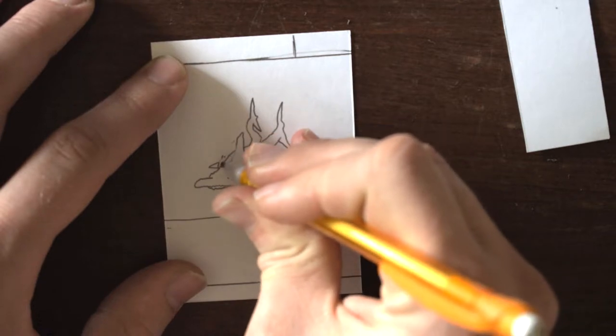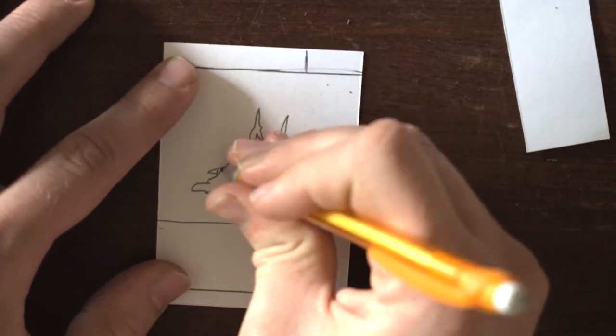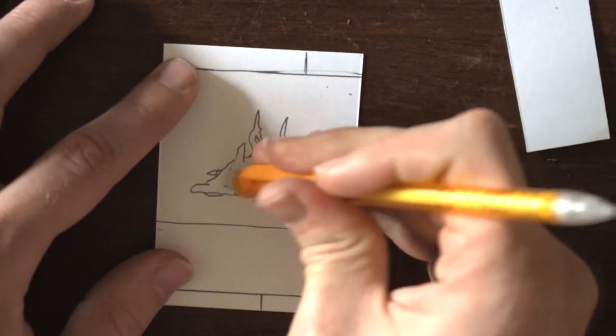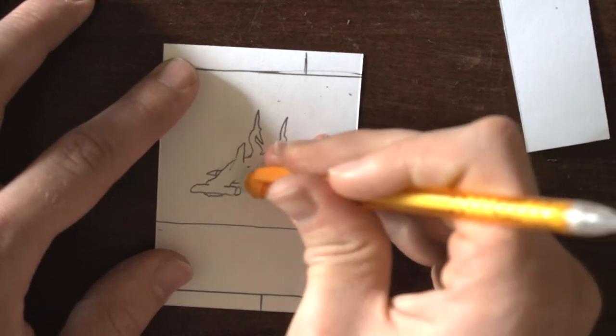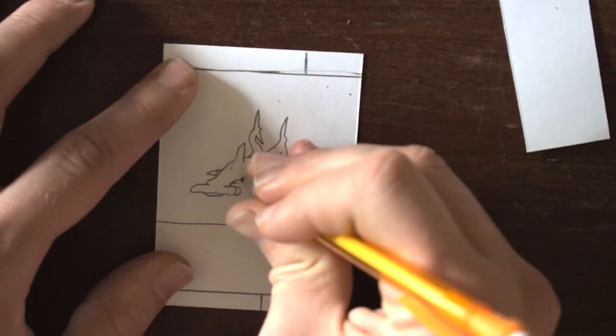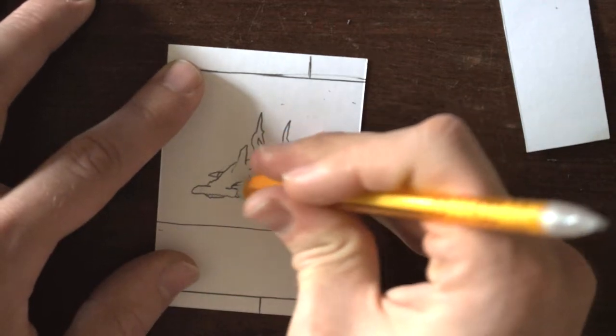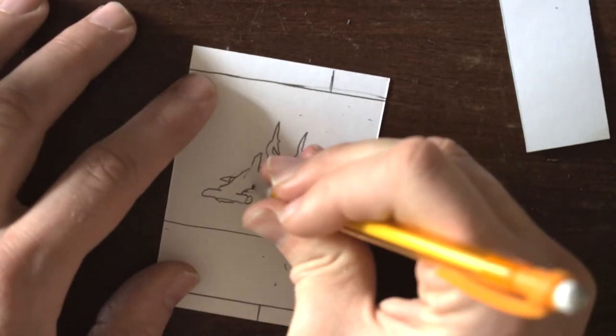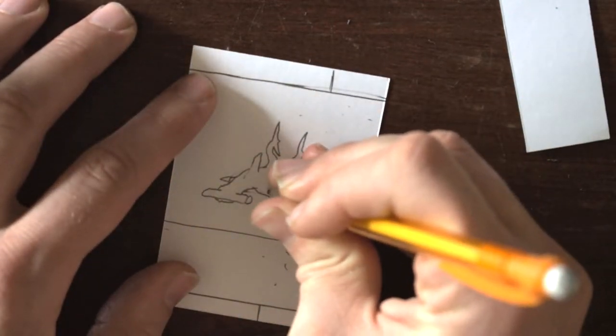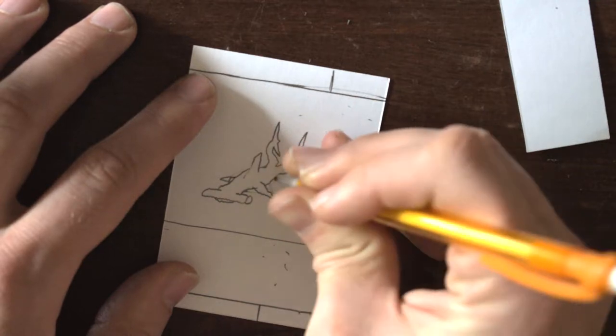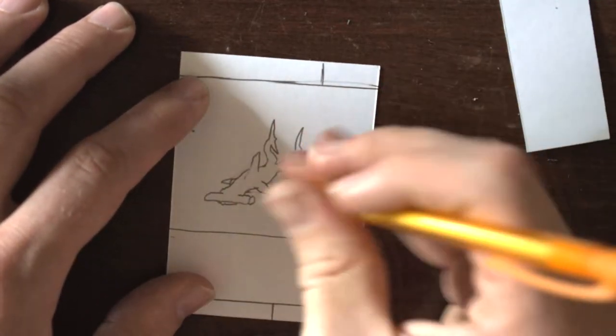Maybe we'll make him a little skinnier. Yeah, I think he's fat. He's too fat. Let's make him skinnier. Yeah, he looks better skinnier.